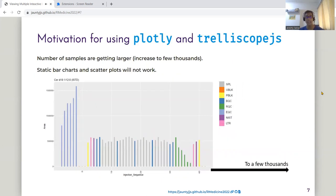However, as time passes, our latest tests begin to accept samples that are very large, up to a few thousands. As a result, static bar charts and scatter plots will no longer work, as it is hard to see the points within the confined spaces of a static plot.